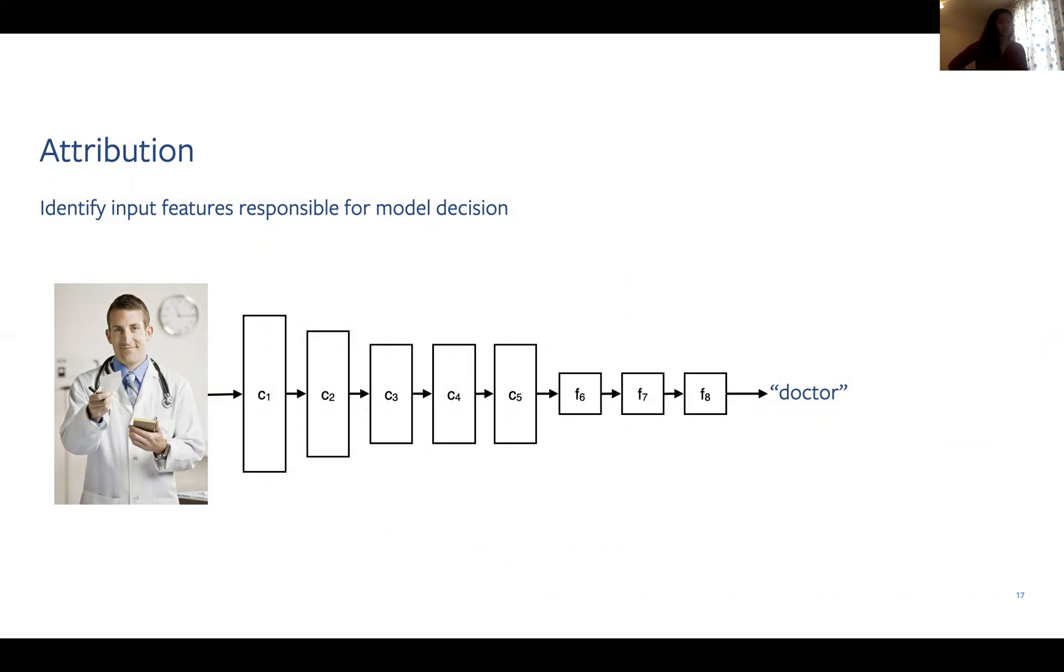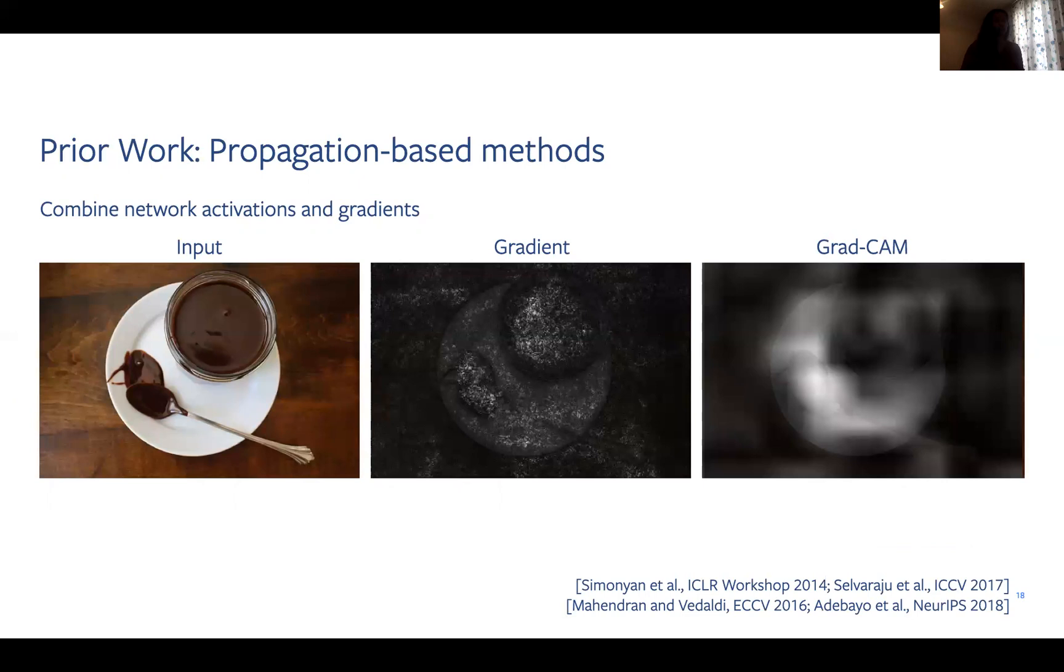This research problem is formally known as the attribution problem and is concerned with finding what parts of the input are responsible for a model's decision. Take, for instance, this image recognition network, which successfully tells us that this image contains a doctor. However, we don't know if this network is recognizing the doctor from the presence of a stethoscope or white coat, or if instead it's basing its decision on protected features such as the race and gender of the doctor encoded in space. Thus, attribution is useful for understanding and diagnosing the behavior of deep neural networks. One approach to this problem combines network activations and gradients that have been propagated through a network to generate an attribution heat map. These methods are fast to compute as they only require one forward and backward pass. However, their meaning is difficult to interpret because of their heuristic nature. What does it mean when a heat map highlights a region?